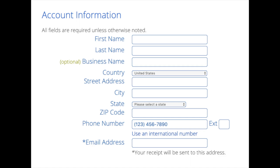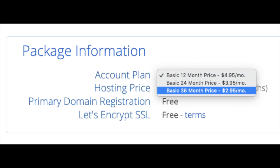You are now brought to a Create Your Account page. Input your information: first name, last name, business name (optional), country and address information, phone number, and the best email for you — as you'll get emailed a receipt of payment and a copy of your login credentials. Below that you will see Package Information. Under Account Plan you can select the term for your hosting package: 12 months, 24 months, or 36 months. You'll save money the longer you purchase your hosting for.